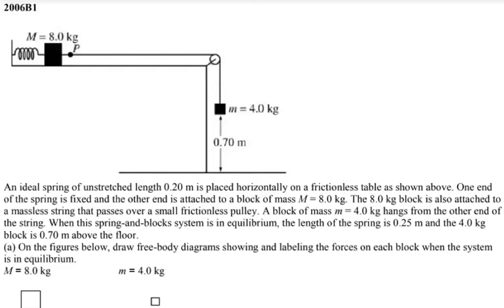This is the AP Physics B 2006 exam. I will let you read the question and try to understand it. Write everything that is given — pause the video, take your time, write down everything given, understand the question, and then you can listen to me. An ideal spring of unstretched length 0.2 meters is placed horizontally on a frictionless table as shown above.